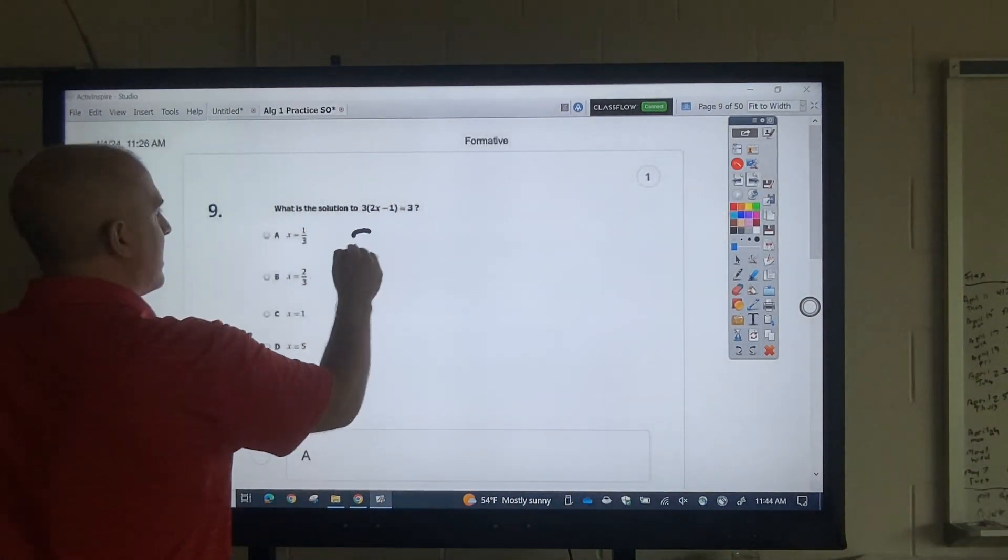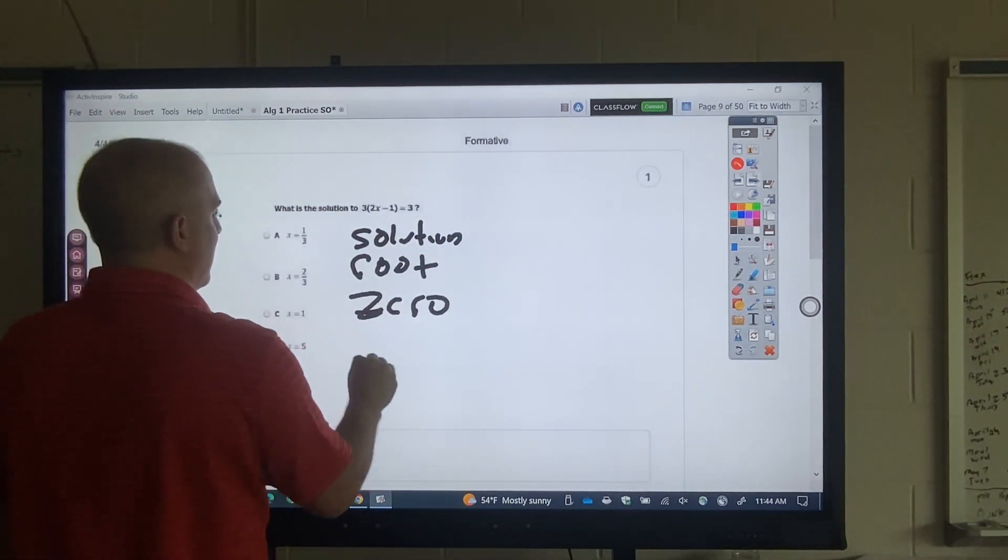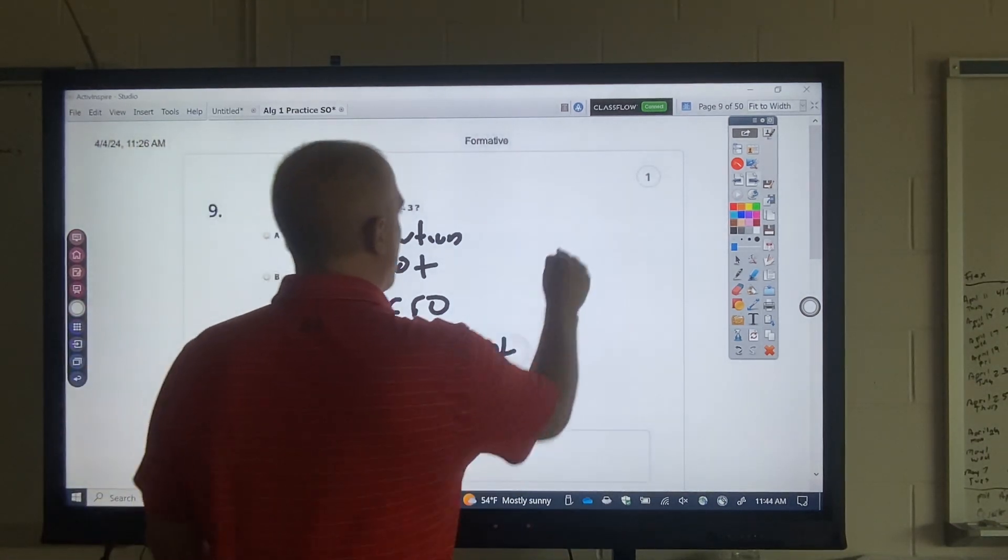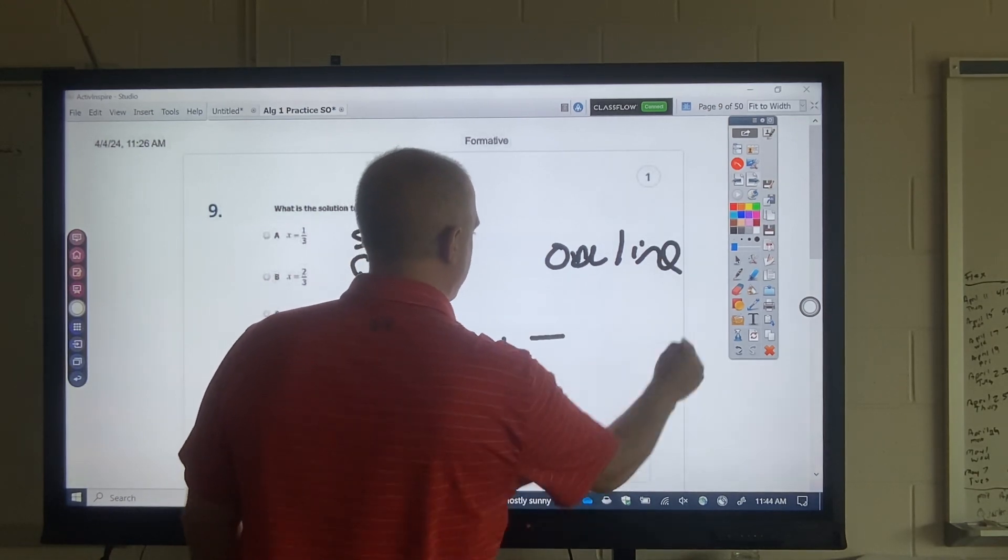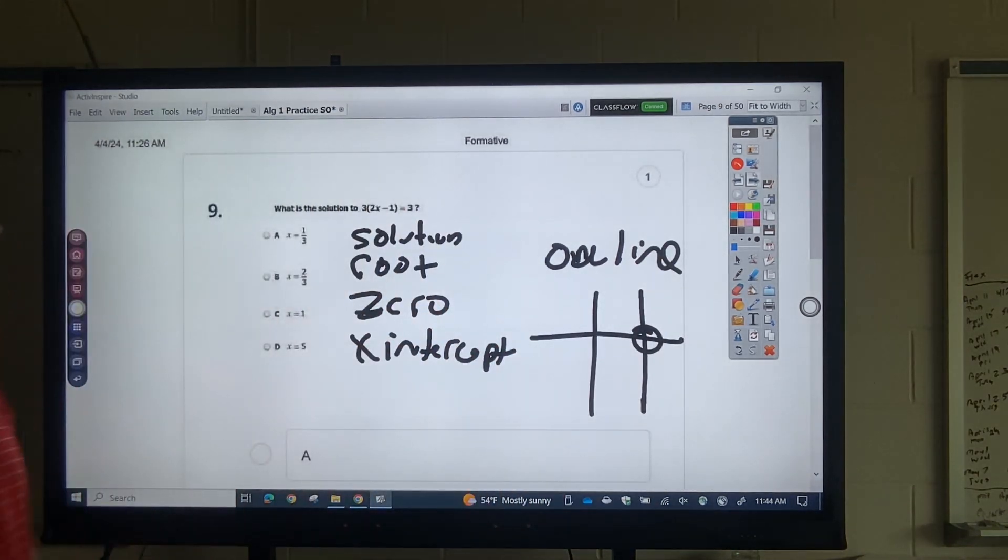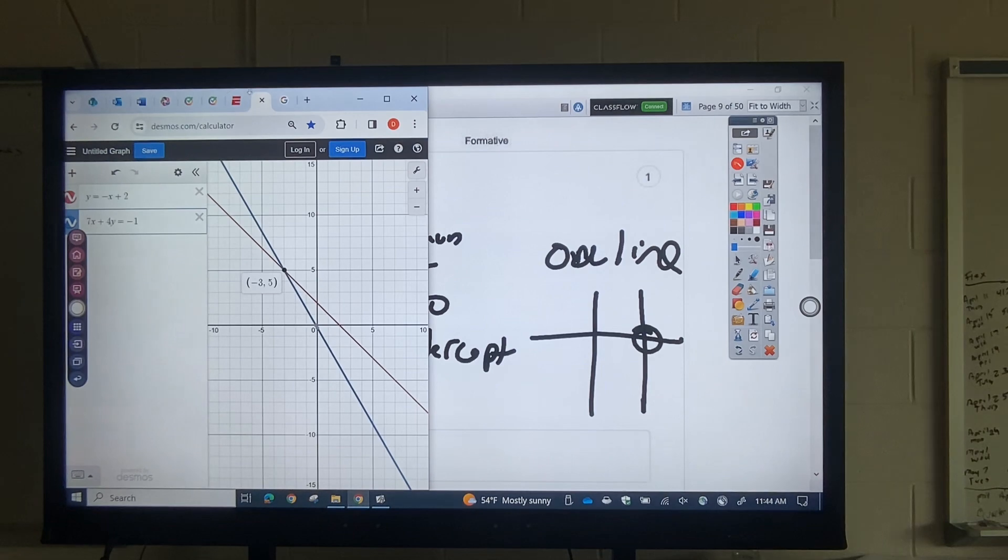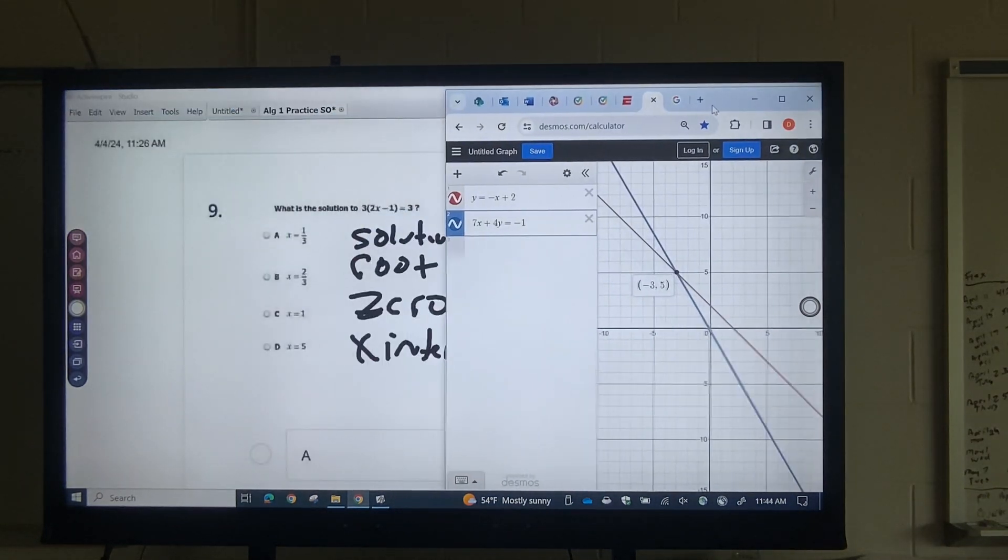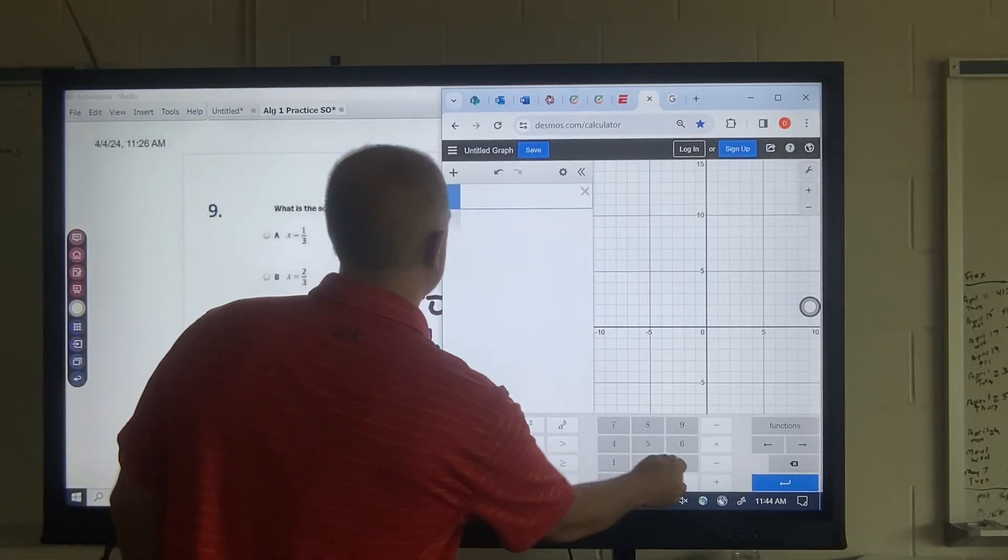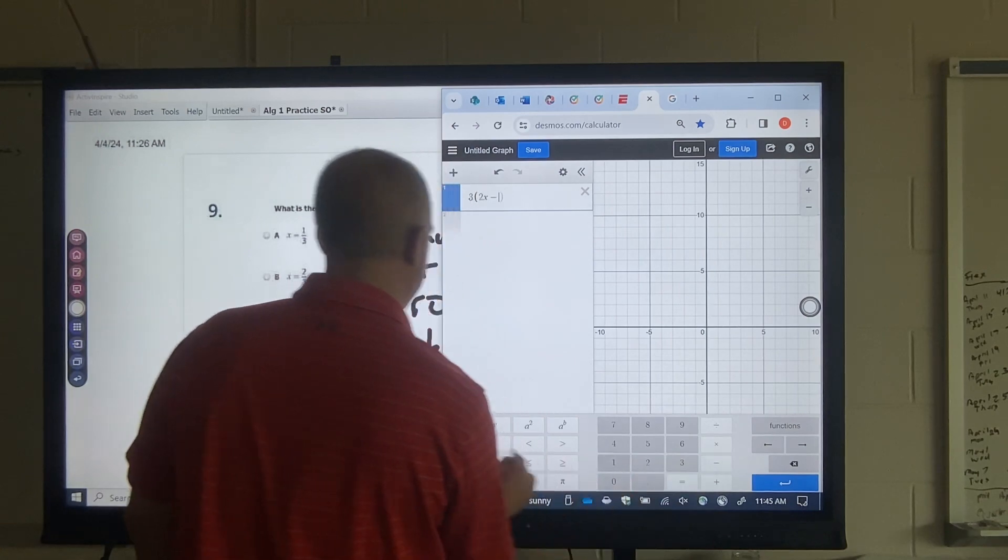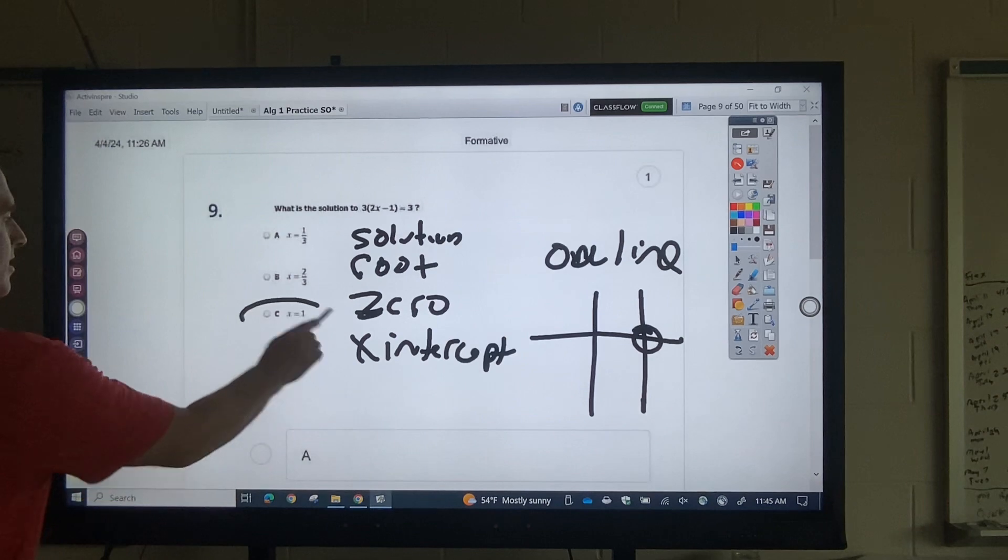Okay. Equations. Now, when you have, anytime they ask you for a solution, root, 0, x-intercept, and they have one line here, all you're looking for is where does it cross the x-axis at? That's all you need. Okay. All right. I might move these equations back over. But it's Desmos back over to the other side. Okay. So what I want to do, all right, 3, 2x minus 1, all right, equals 3. Crosses at 1. That's my answer.